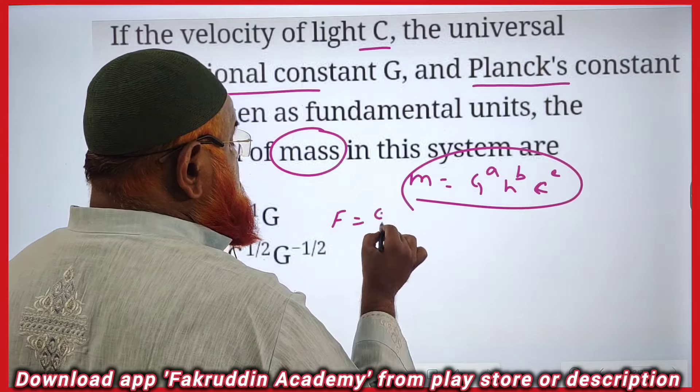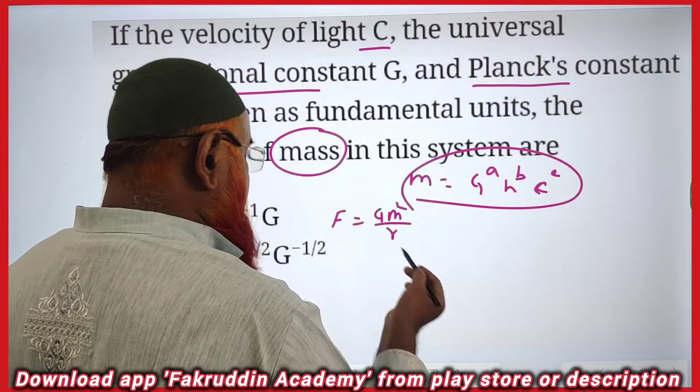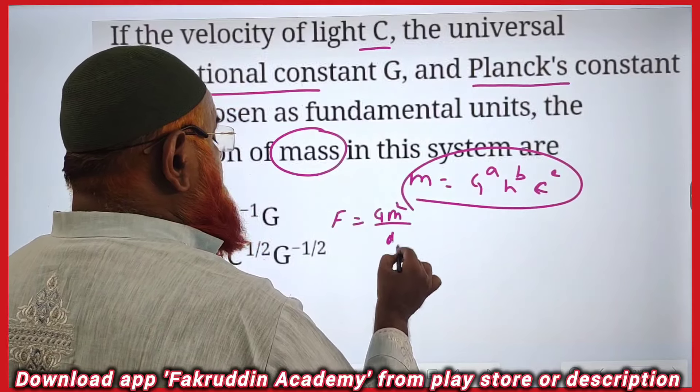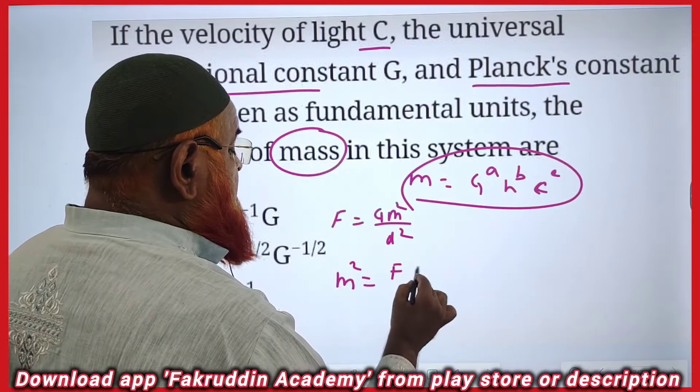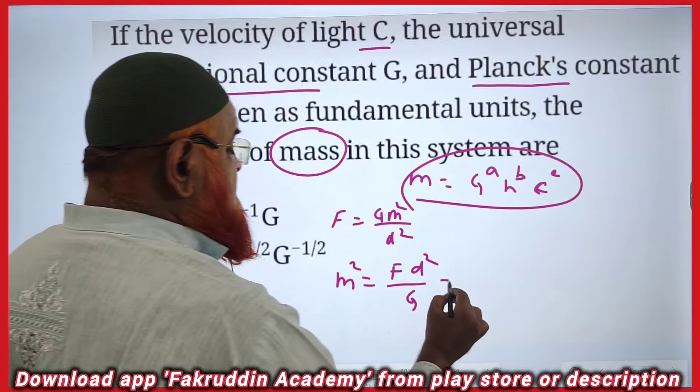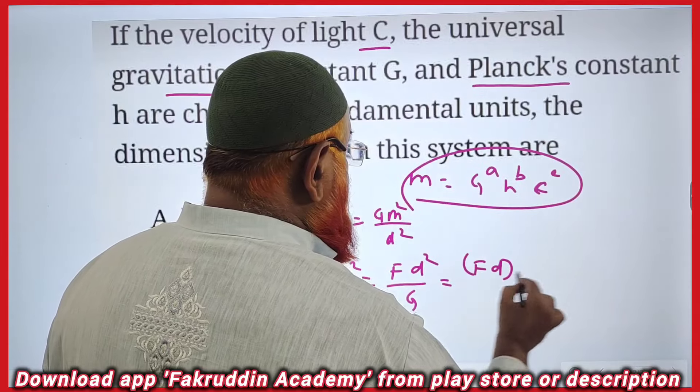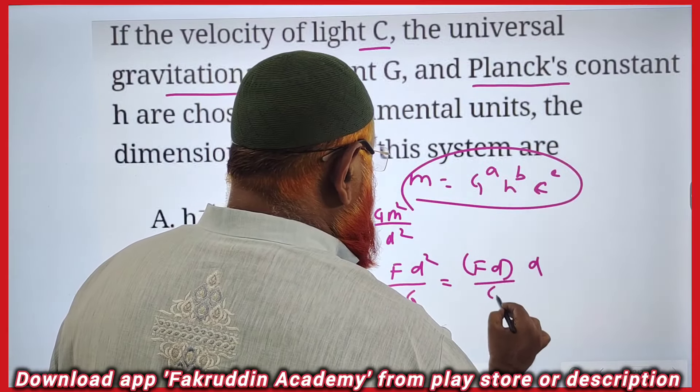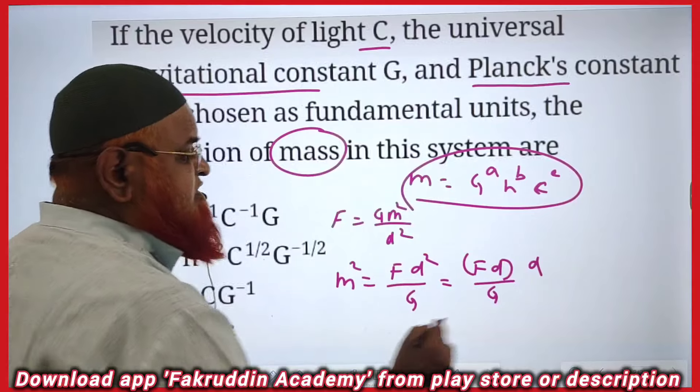You all know F is equal to G m1 m2 by r square or you can take d square, whatever it may be. So I am taking m square is equal to F into d square by G. And what is F here? F can be considered F into d, into d by G. You can write like this, isn't it? F into d I have taken.